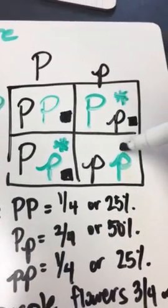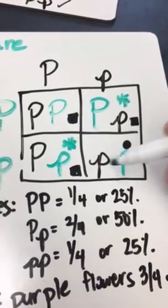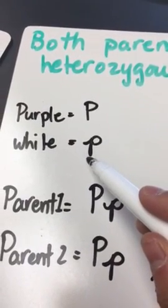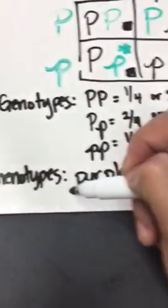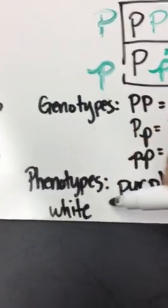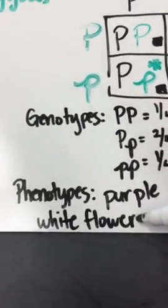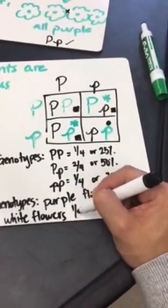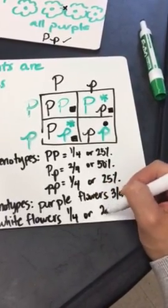Well, how about this one? This one is, it has two recessive alleles. And we said if it has recessive alleles, it's white. So here we have white flowers. It happens one out of four times, or 25%.